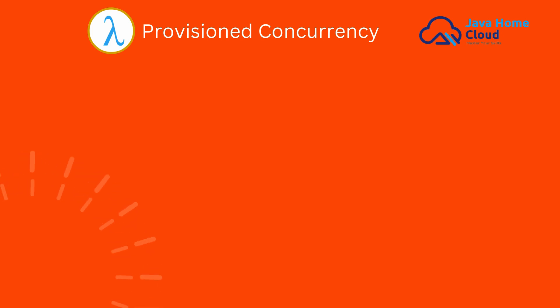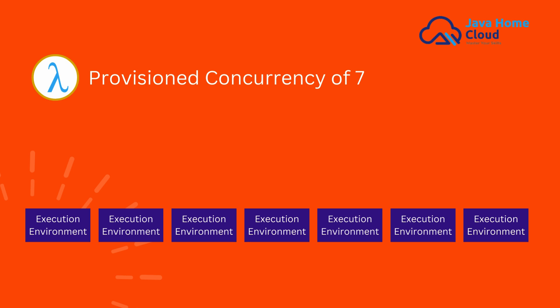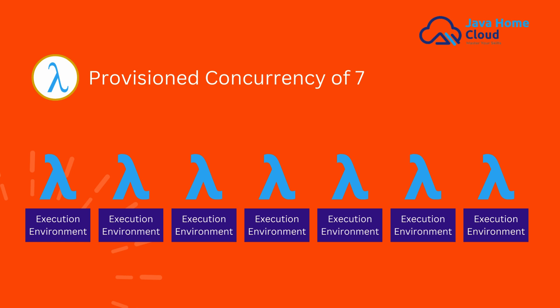One solution is reducing cold starts with provisioned concurrency. This feature keeps your functions initialized and warm. For example, a function with a provisioned concurrency of 7 keeps 7 execution environments ready. If Lambda receives 7 requests at a time, all 7 slots are in a warm state and Lambda executes all 7 requests without a cold start. However, if all 7 environments are busy and an 8th request arrives, that requires a cold start.